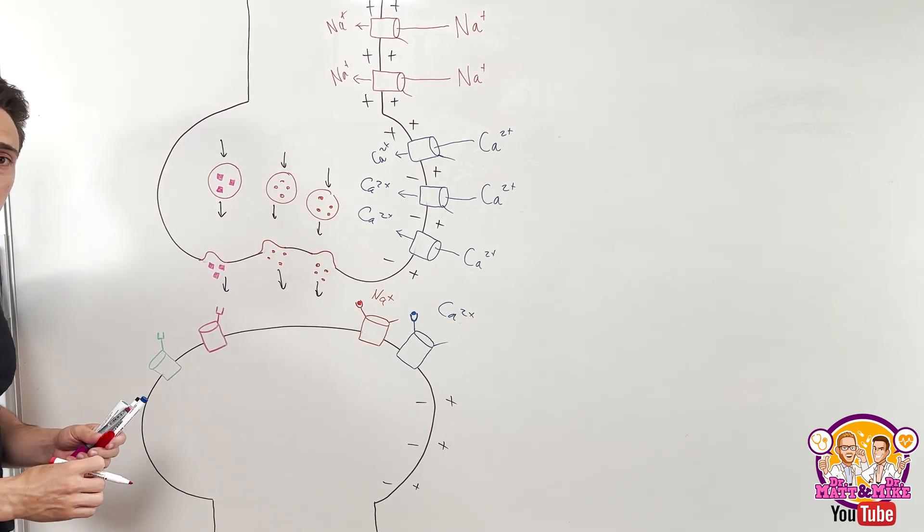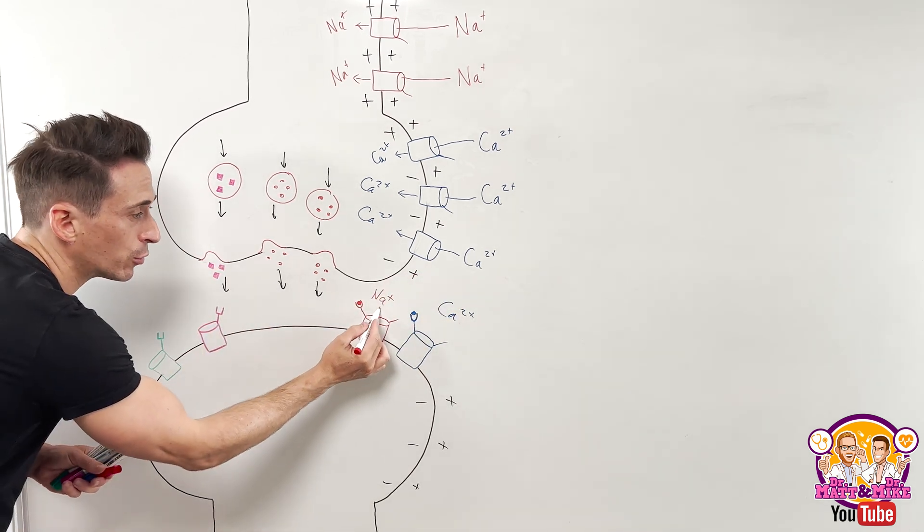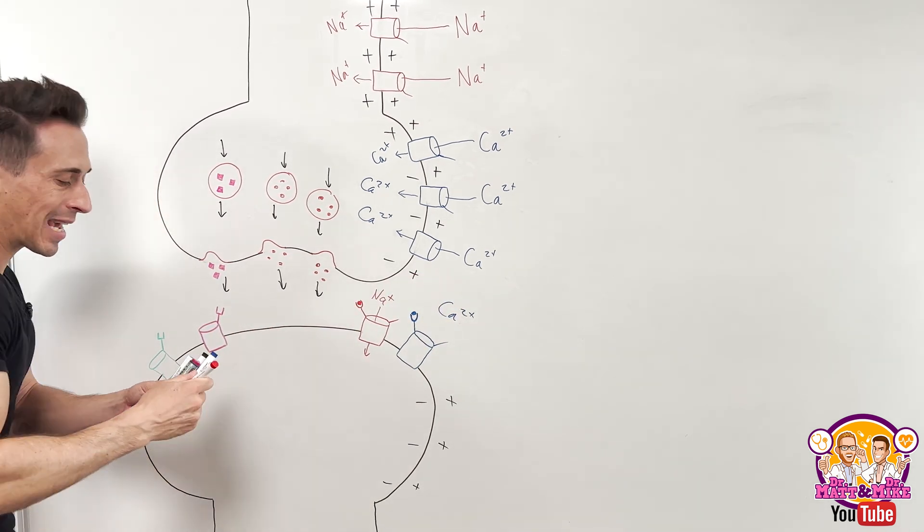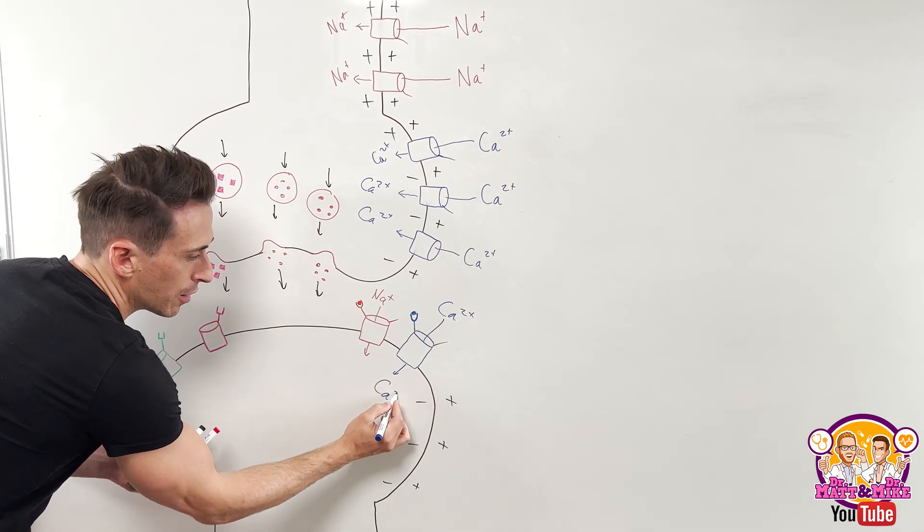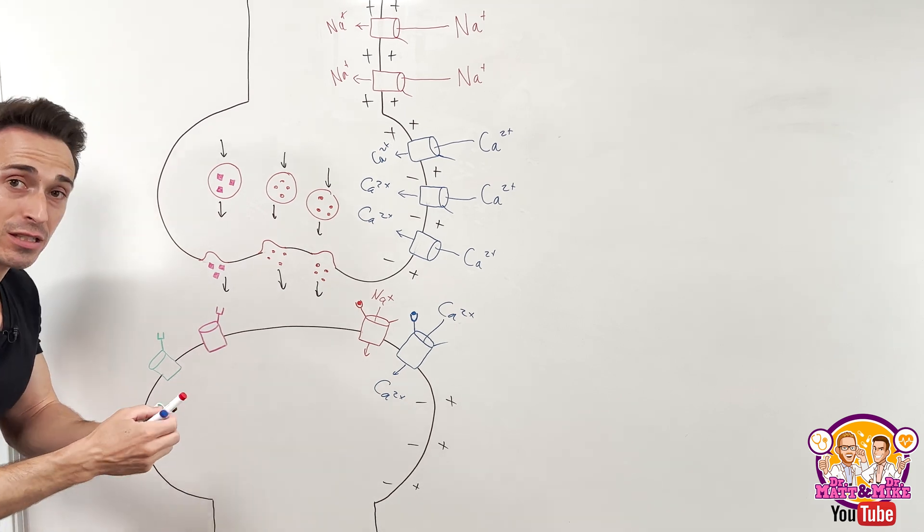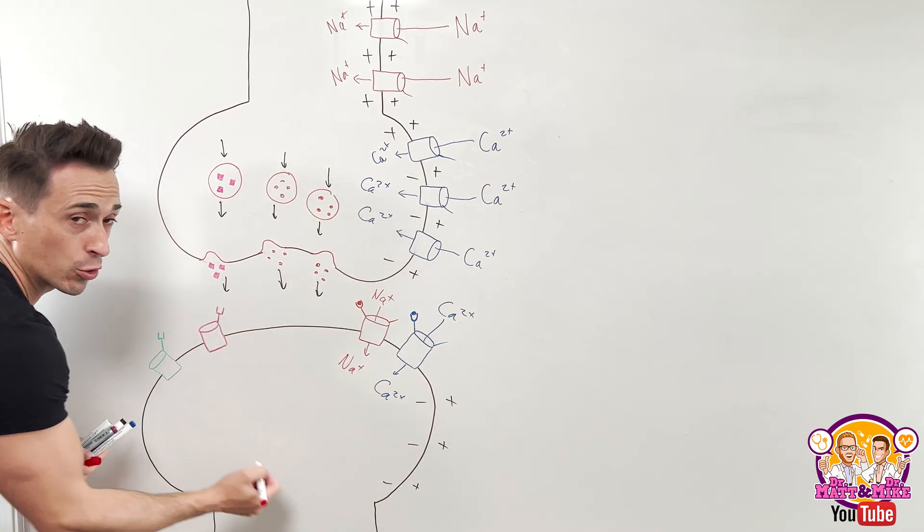The point I'm getting across here is that excitatory neurotransmitters tell positive ion channels to open up if those positive ions sit predominantly outside, because that means they will diffuse inside, carrying their positive charge with it.